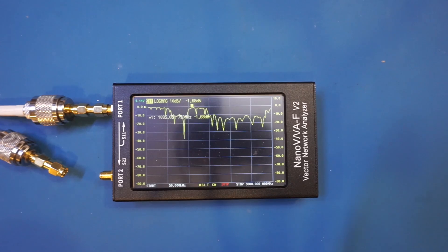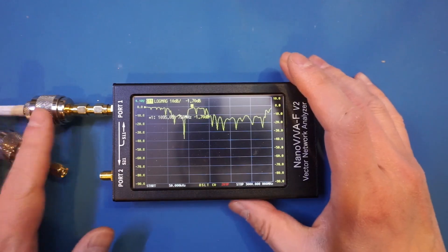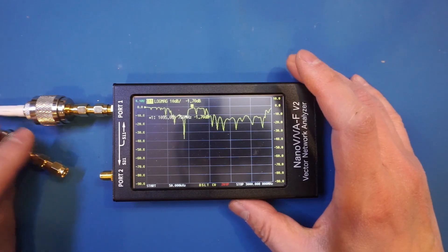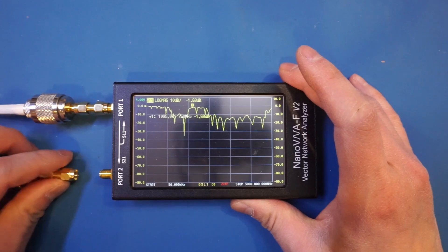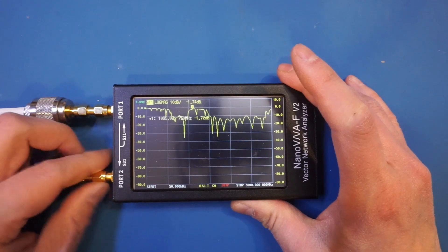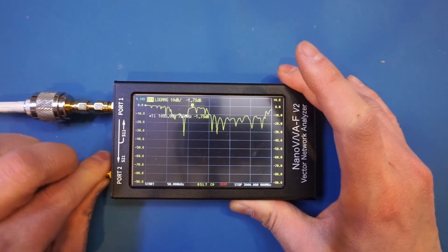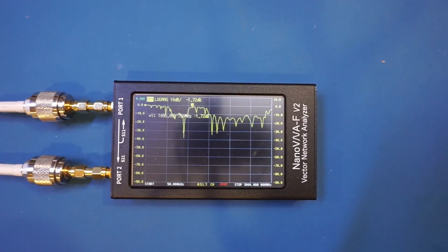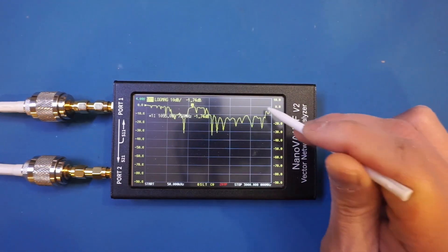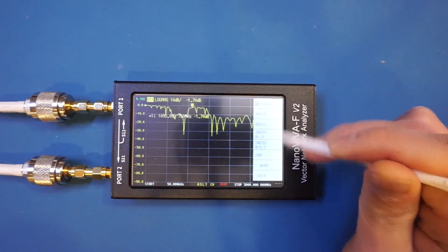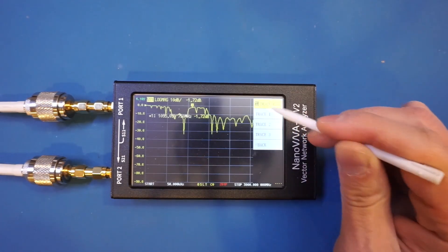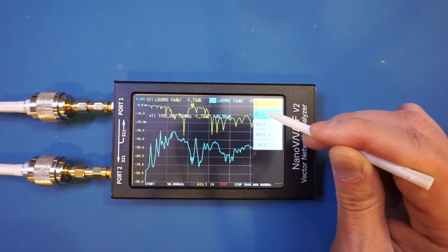While we're sweeping the entire three gigahertz frequency range let's take a look at the cross polarization isolation between these two sets of orthogonally polarized antennas. To do that I'm going to leave this first set of antenna in the S11 port and plug in the other set into the S21 port. And then we will enable the S21 plot.